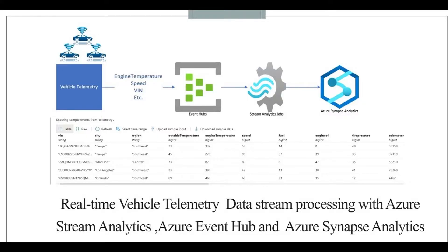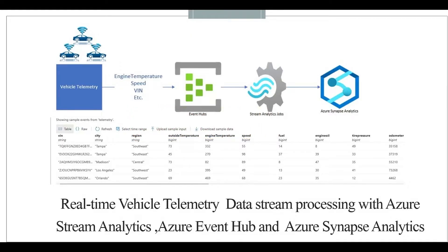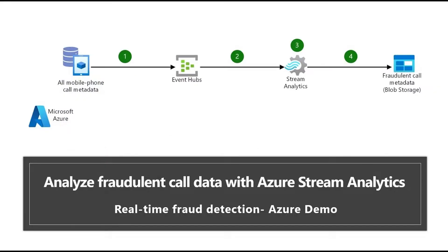The car sensors detect temperature, engine temperature, speed, and fuel levels. This data is ingested into Event Hub, then we use Stream Analytics to run jobs on top of the real-time streaming. This is all about how to detect fraudulent call data with Azure Stream Analytics — a real-time fraud detection demo.